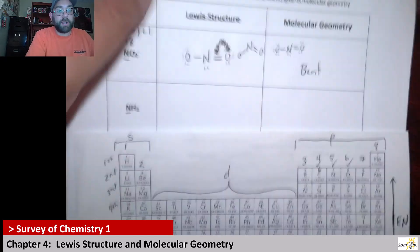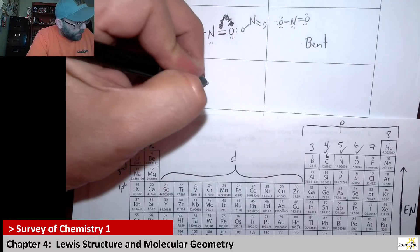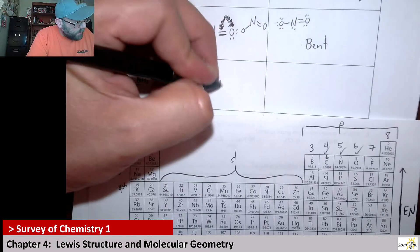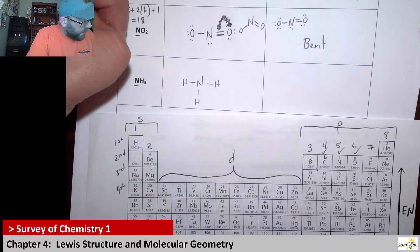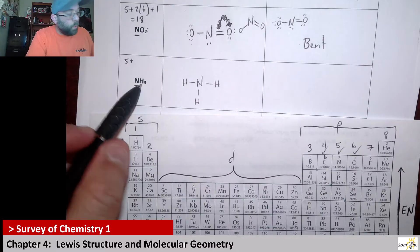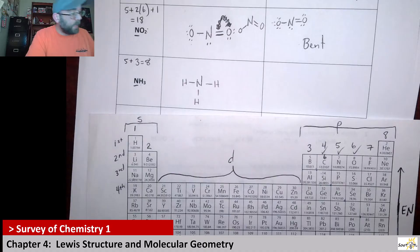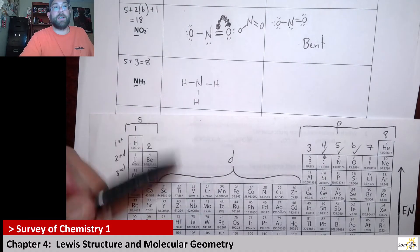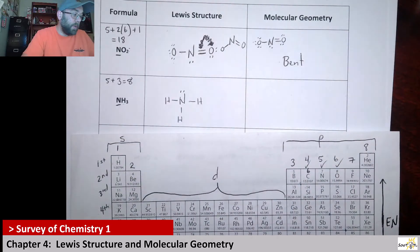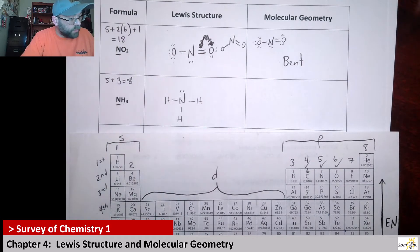Next up we have NH3. Nitrogen is your central atom and you're going to have three hydrogens on it. Nitrogen has five valence electrons, plus one per hydrogen, so plus three. That's eight. When we drew the original bonds we used six electrons, so we're missing two, and that's going to look like a lone pair. That's our Lewis structure for ammonia.